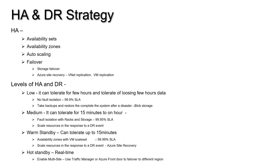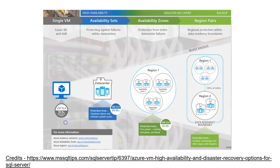Architects should understand these strategies very clearly. Let me bring up a picture to illustrate. If you take an Azure VM as a single instance, it will still give you 99.9% SLA. Availability sets mean one VM sits on one rack space and the other VM sits on a different rack space.